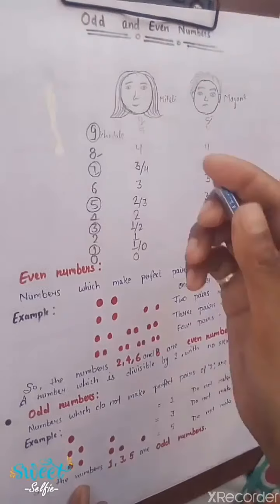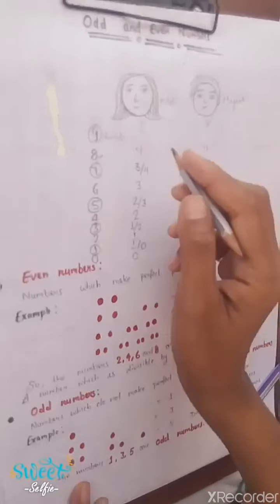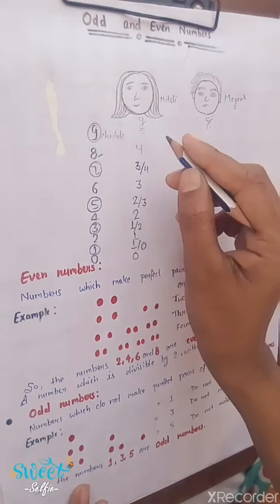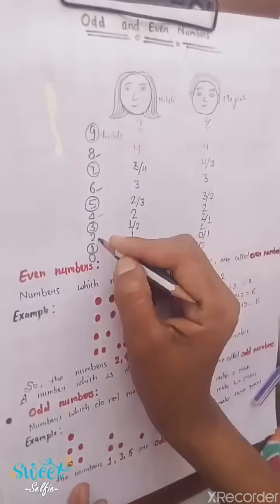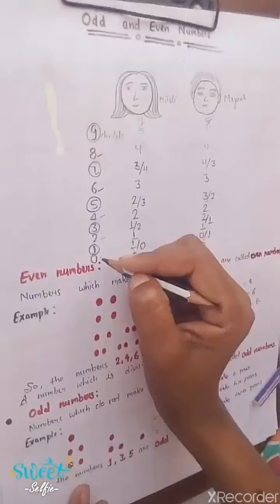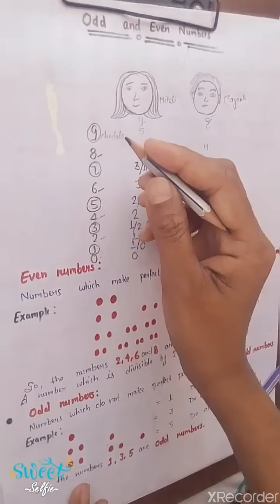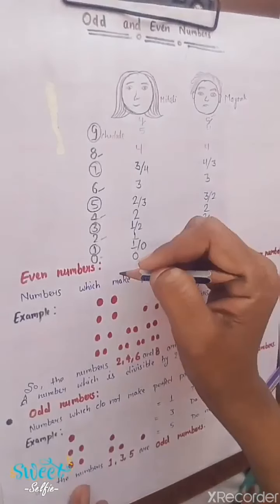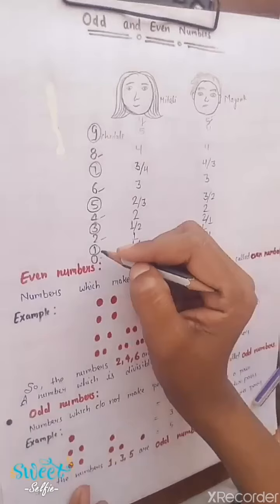Those numbers which can be equally divided between two persons — Mayank and Mitali — are called even numbers. So which are even numbers? Zero, two, four, six, and eight. These numbers are even numbers. And the rest of the numbers are odd numbers.